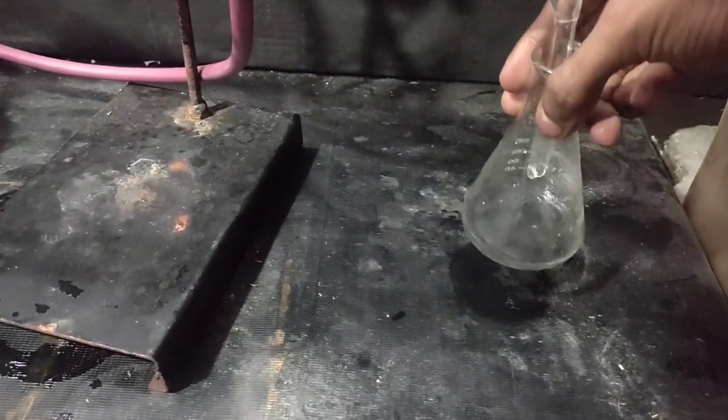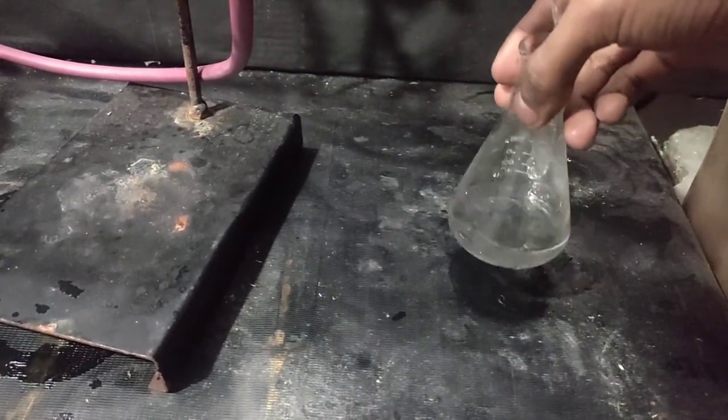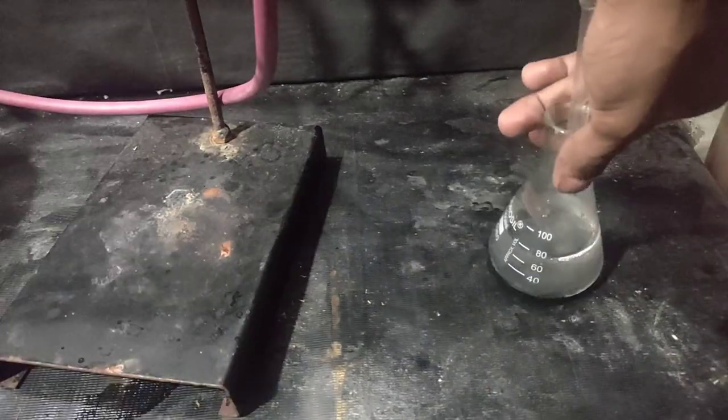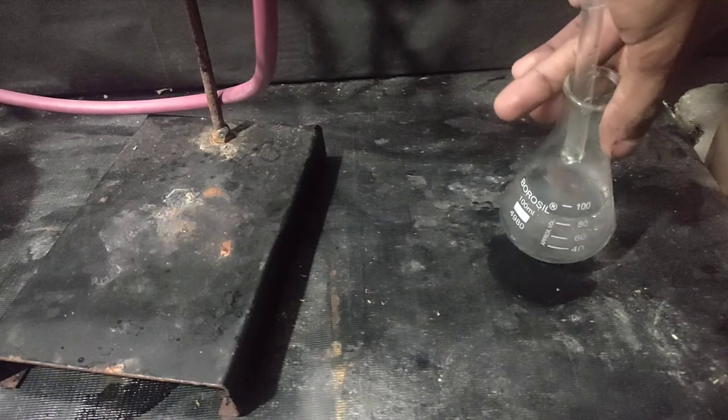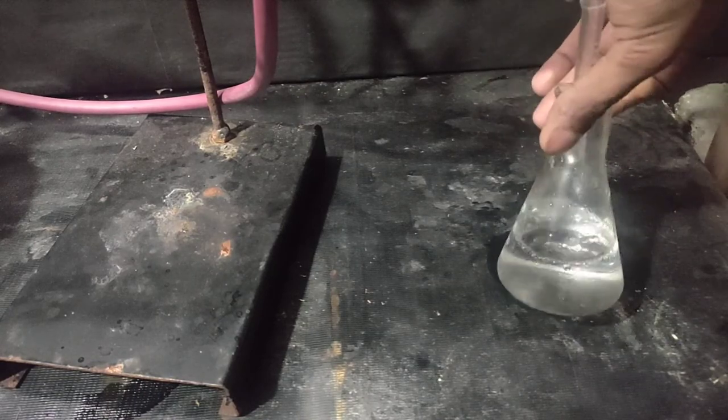On swirling the flask, I could see the formation of some oil drops. After collecting 80ml of distillate, on swirling the flask you can see that there is an oily layer on top of it.